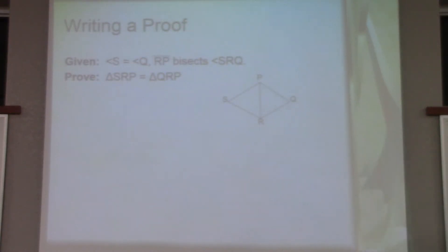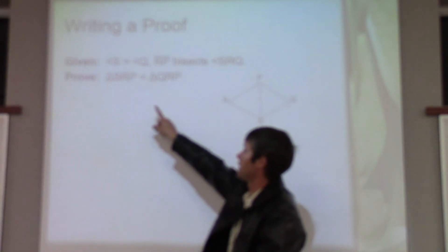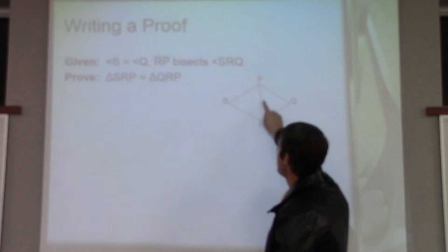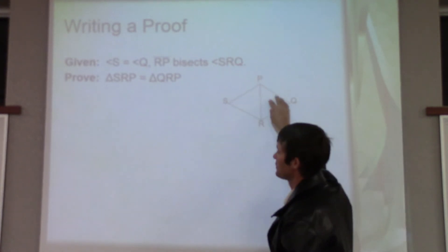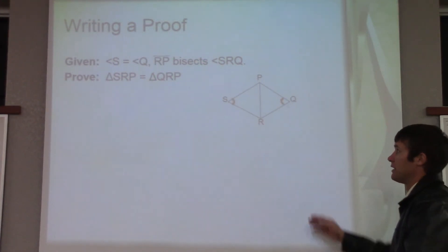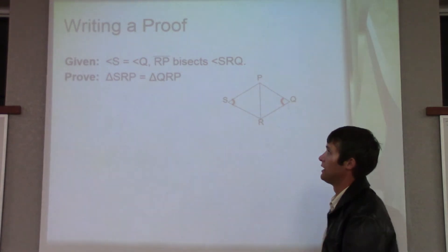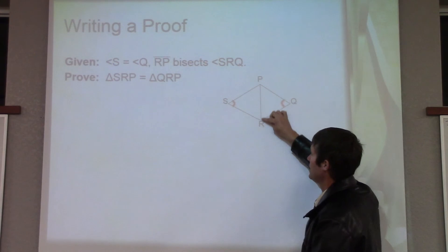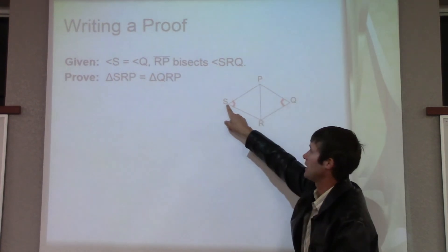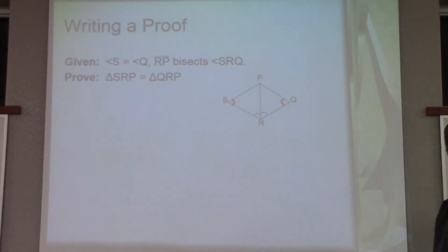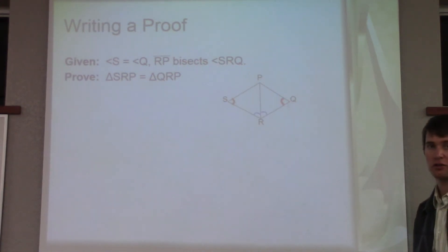So we want to prove: how can we prove that triangle SRP is equal to triangle QRP? Well, let's go through the information given to us. First, angle S is equal to angle Q, so we mark that — those two angles are congruent. Then we're told that RP bisects angle SRQ, so this line bisects that angle.